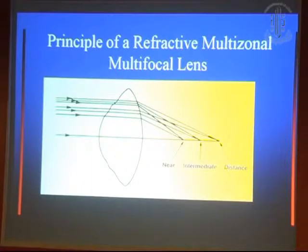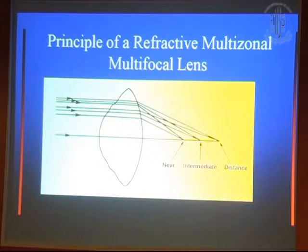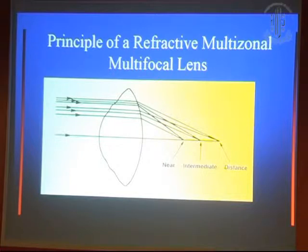This is the principle of the refractive lens. They have 3 zones, 4 zones, sometimes 5 zones, right from center to periphery. The center portion here focuses for near in some lenses, while others focus for distance. So they are either distance-dominant, if the center is for distance, or near-dominant if the center is for near.